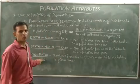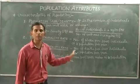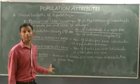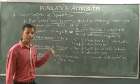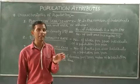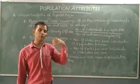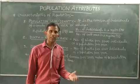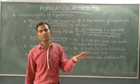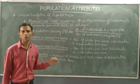And sex ratio — it is the number of females per 1000 males in a population at a given time. The number of females relative to 1000 males in a population at a given time is called the sex ratio.